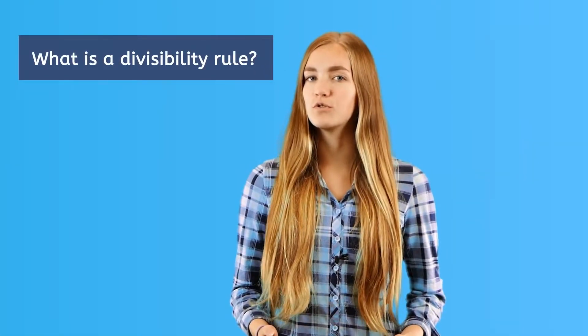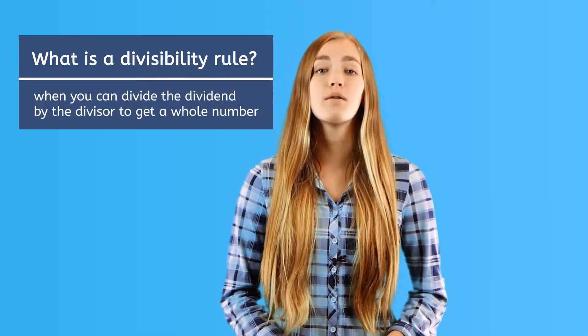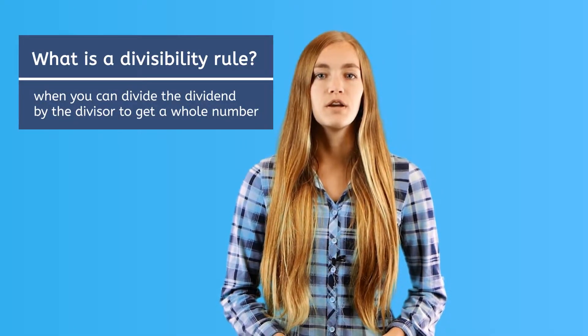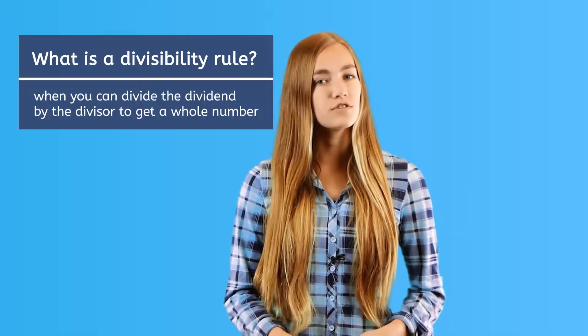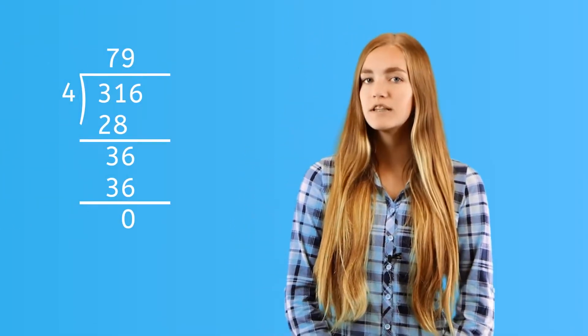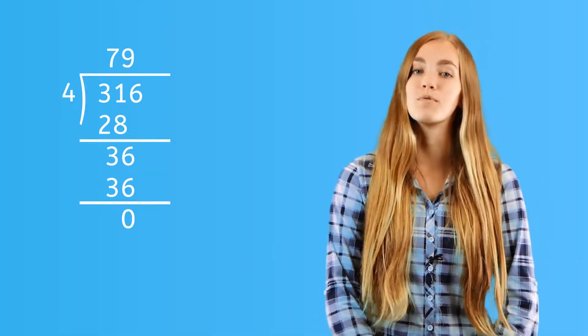Divisibility rules let you know, at a glance, whether a number can be divided by another number to get an answer that is a whole number. Divisible means you can evenly divide the dividend by the divisor and the quotient, or the answer, is a whole number without a remainder.